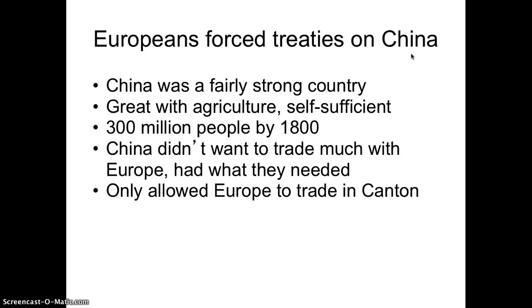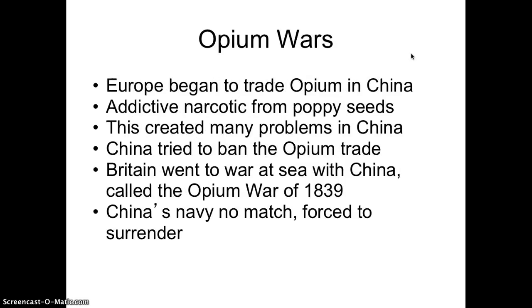If you give a mouse a cookie, they will dominate you economically. China's first real problem with Europe during the Age of Imperialism came when Europe began trading opium in China. They would take poppy seeds, grow them in Afghanistan, Pakistan, and India, convert them to opium — an opiate class of highly addictive drugs, like Oxycontin today — and then sell that opium to the Chinese market.